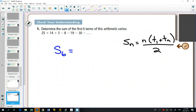In this formula, do we know what n is? Yes, we want to find six terms. Do we know term one? Term one is 25. Do we know term six, which is the last term in the sum of six? One, two, three, four, five, six. It is negative 30.